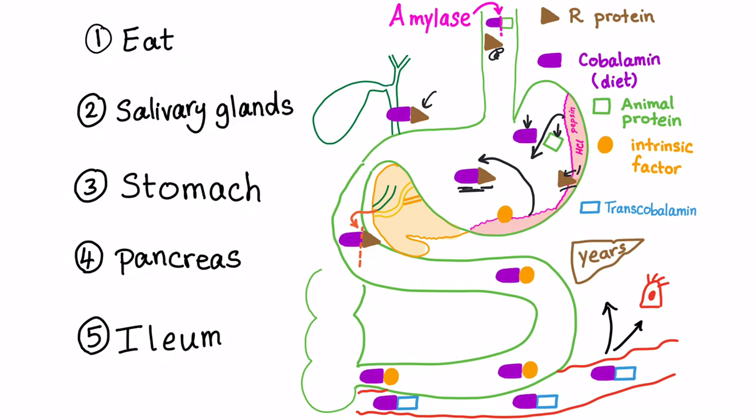Also, your amazing stomach will secrete something called the intrinsic factor. This intrinsic factor is very important for the absorption of vitamin B12. Now let's go out of the stomach here. When we reach the small intestine, the pancreas will secrete its pancreatic secretion and also the bile will secrete the R protein. They will go together in the duodenum.